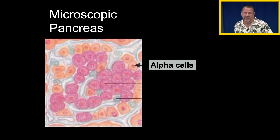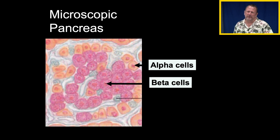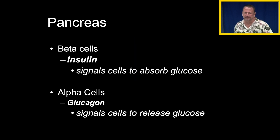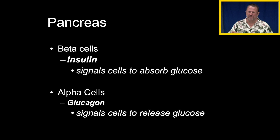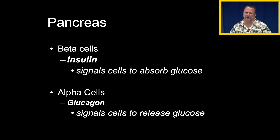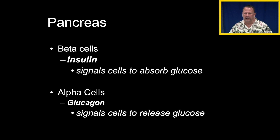The main islet cells we'll talk about are the alpha cells and the beta cells. There are also theta cells with somatomedin, but that's not really part of normal clinical pharmacology. In clinical pharmacology, we talk about islet cells that make glucagon and insulin. The beta cells make insulin — that's the signal telling cells to absorb glucose. The alpha cells make glucagon, and they do exactly the opposite — they signal cells to release glucose into the bloodstream.